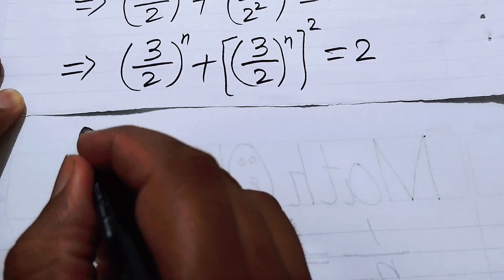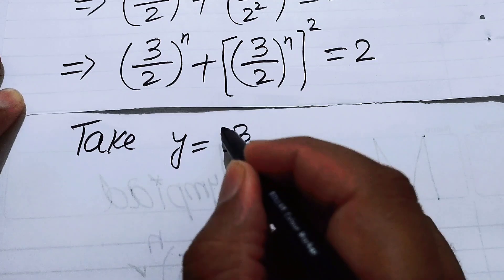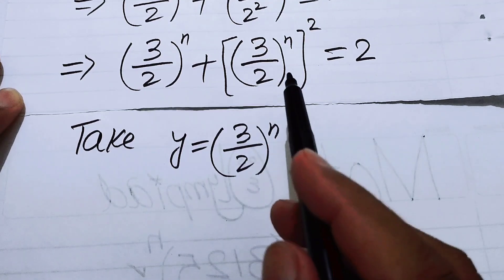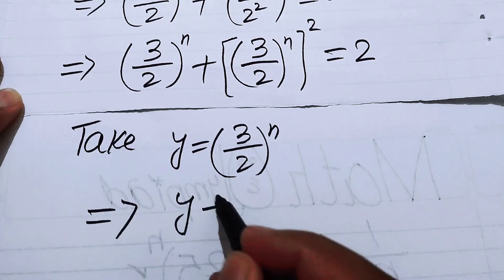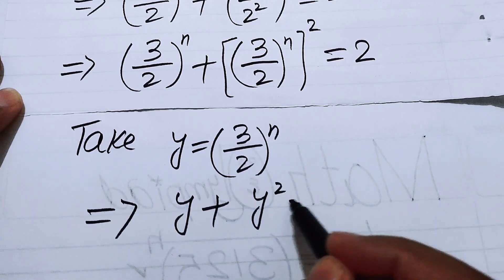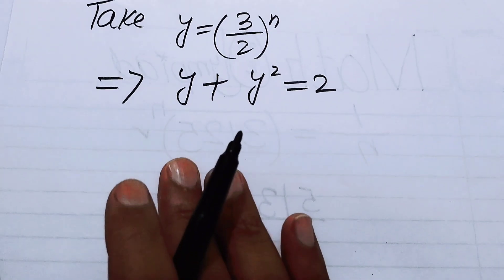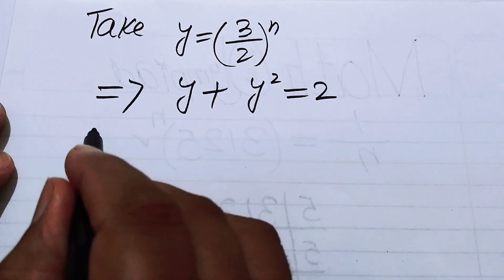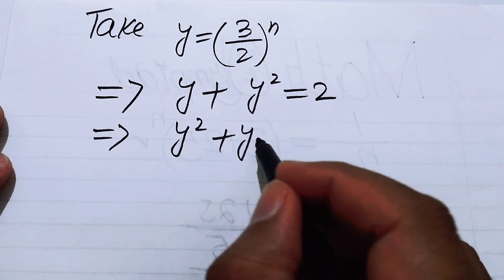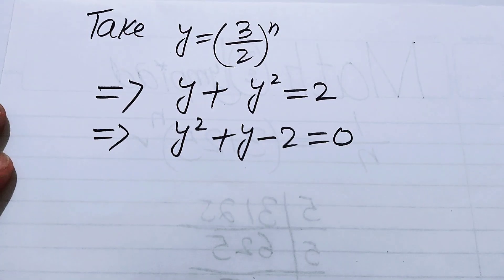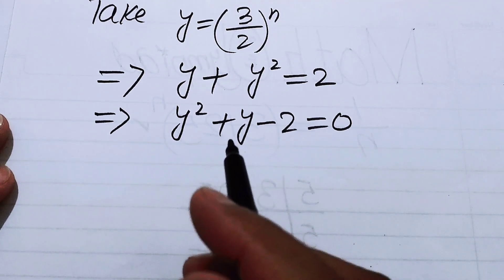To convert this into a quadratic form, let y equal 3 over 2 to the power of n. The exponential equation becomes y plus y squared equals 2. Rearranging the terms, we get y squared plus y minus 2 equals 0.